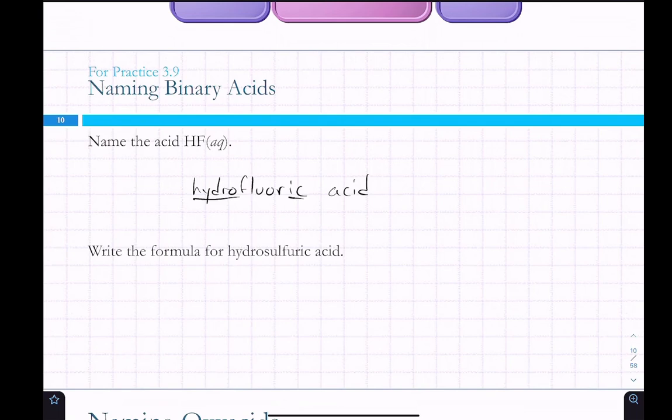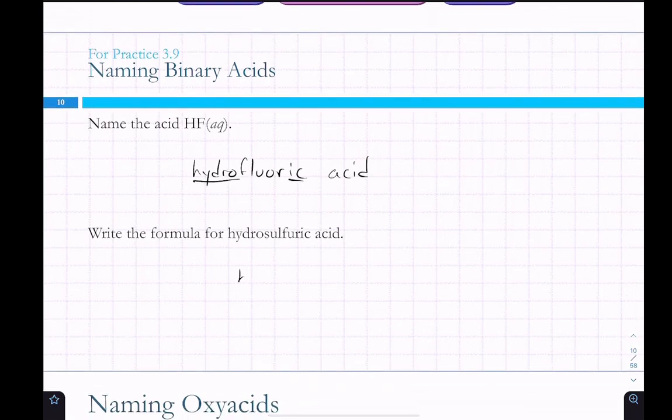There really are a limited number of these, because there's a limited number of nonmetals that you can do this with. Hydrofluoric acid, hydrochloric acid, hydrobromic acid, hydroiodic acid. And what would the formula be for hydrosulfuric acid? H2S. Why is it H2S? Sulfur has a negative 2 charge. And so, then we always have as many hydrogens as we have negative charges on the anion. Hydrosulfuric acid.